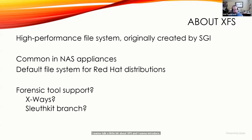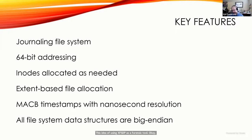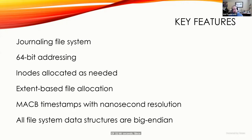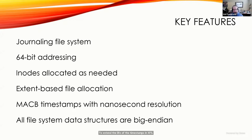XFS is a modern 64-bit filesystem. It has a journal, it uses extents (which in NTFS you'd call a cluster run), and it has all four timestamps including a file creation date — 64-bit timestamps with nanosecond resolution. Up until the latest version, XFS had the 2038 rollover problem because it was based on the old Unix standard of 32-bit seconds since 1970. The latest version of XFS has a new feature to extend the life of timestamps past 2038.